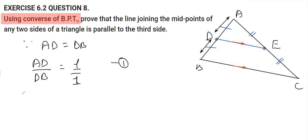Similarly, we have AE is equal to EC. Therefore, from the same reason, we can say that AE over EC is equal to one over one. This is equation two.